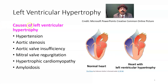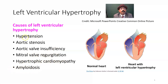What are the causes of left ventricular hypertrophy? The most common cause is hypertension, like essential hypertension. Other causes include aortic stenosis, aortic valve insufficiency, mitral valve regurgitation, hypertrophic cardiomyopathy, and amyloidosis. Any type of long-standing hypertension may lead to left ventricular hypertrophy.